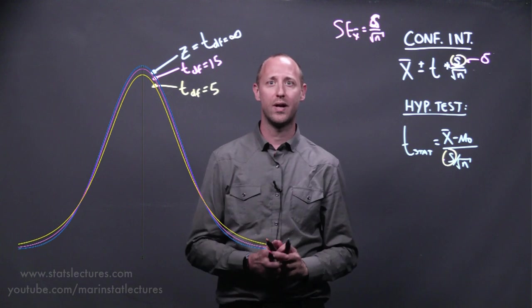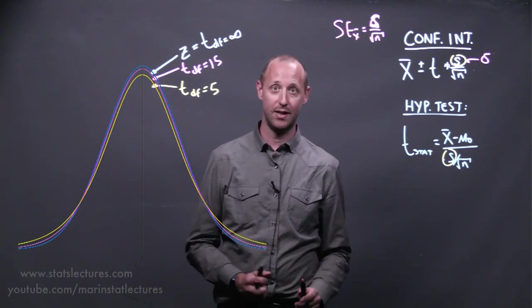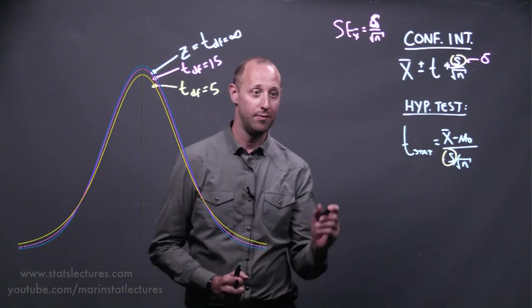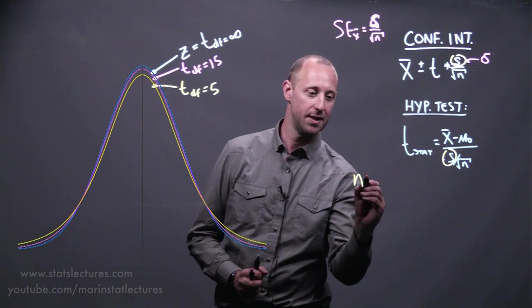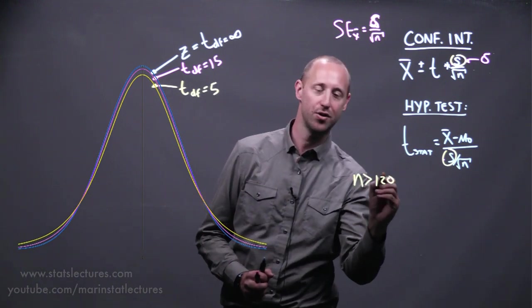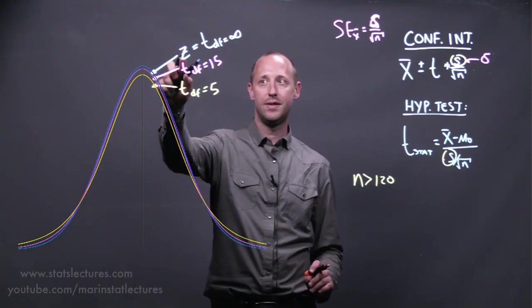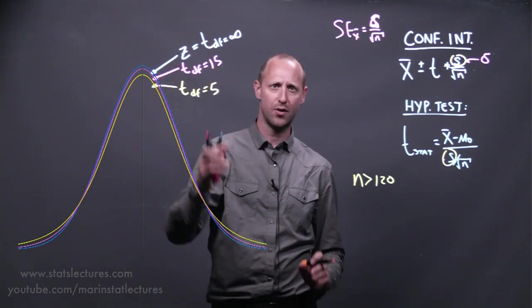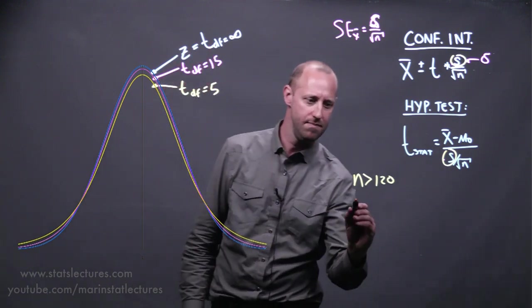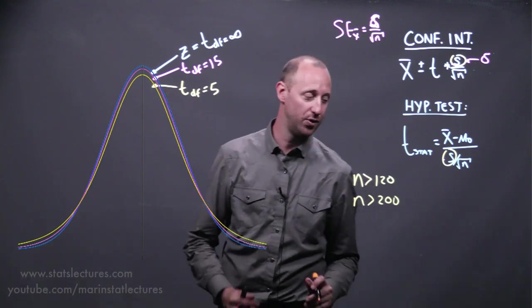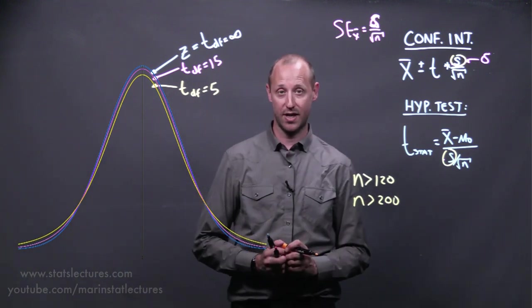Now, it's important to note we're never going to have a sample size of infinity, but once we get a sample size bigger than 120, the t-distribution and the standard normal become approximately the same. Once we get a sample size bigger than 200, there's almost no difference at all.